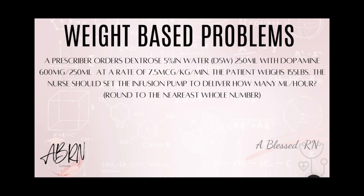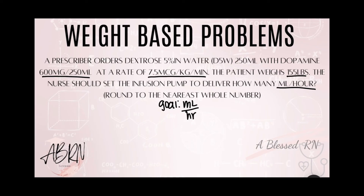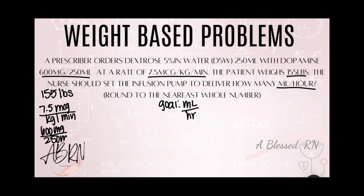Weight-based problems. A prescriber orders D5W 250 mL with dopamine 600 milligrams per 250 mL at a rate of 7.5 mcg per kilogram per minute; the patient weighs 155 pounds. How many mL per hour should the nurse set the infusion pump to deliver? Round to the nearest whole number. Our goal is milliliters per hour, so we need PPP: patient's weight, prescription, and product. 155 pounds is a puzzle piece, the prescription is 7.5 mcg per kilogram per minute, and the concentration is 600 milligrams per 250 mL. I start with milliliters on top, so I flip the concentration piece: 250 mL over 600 milligrams.